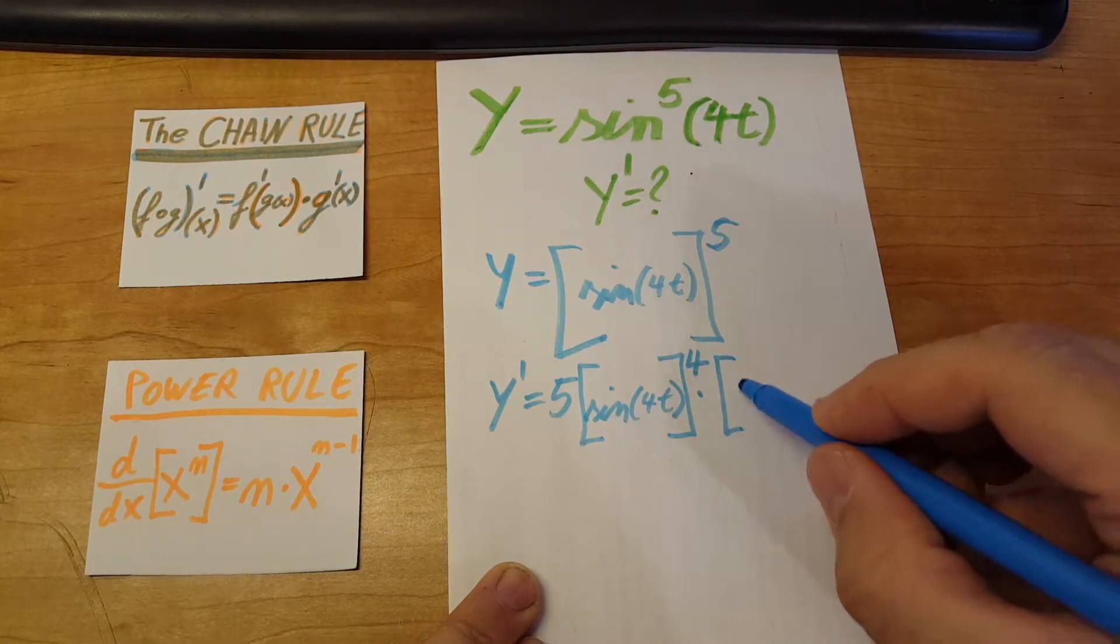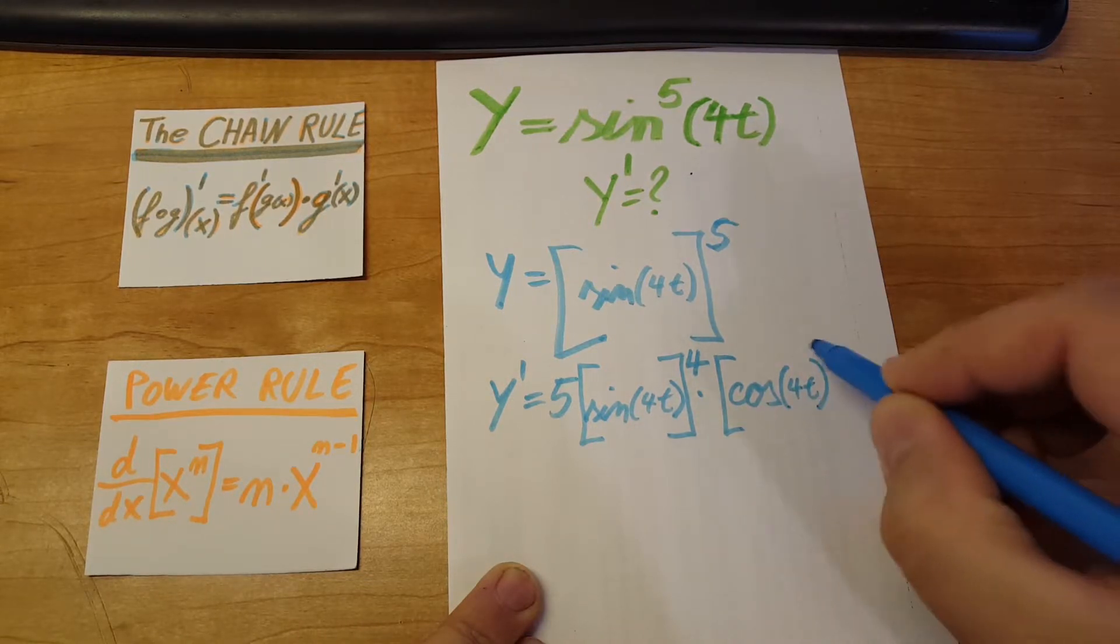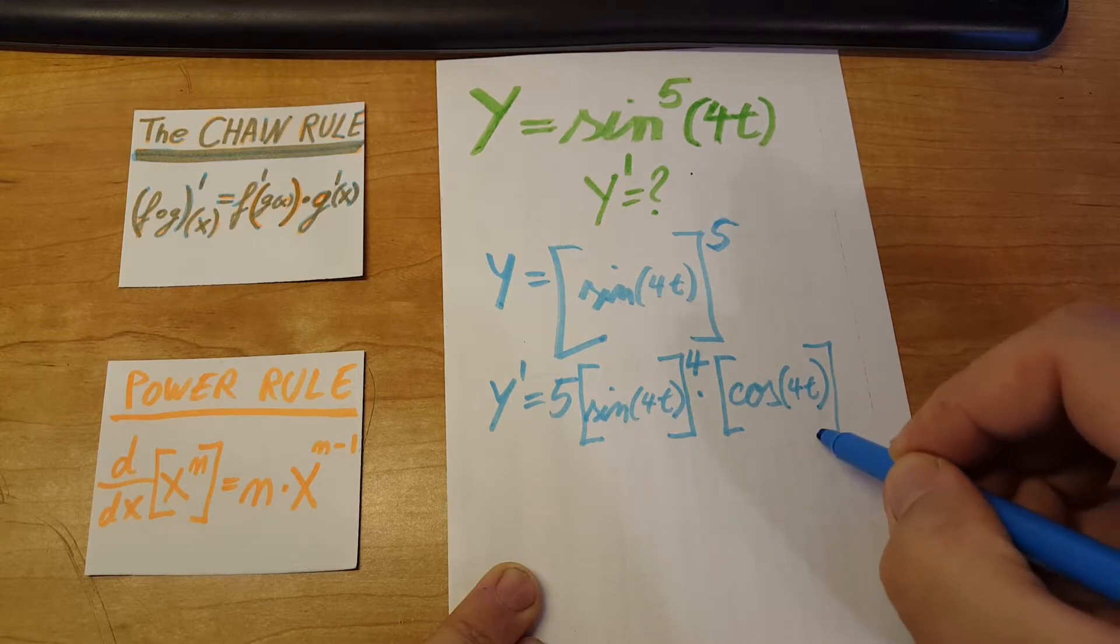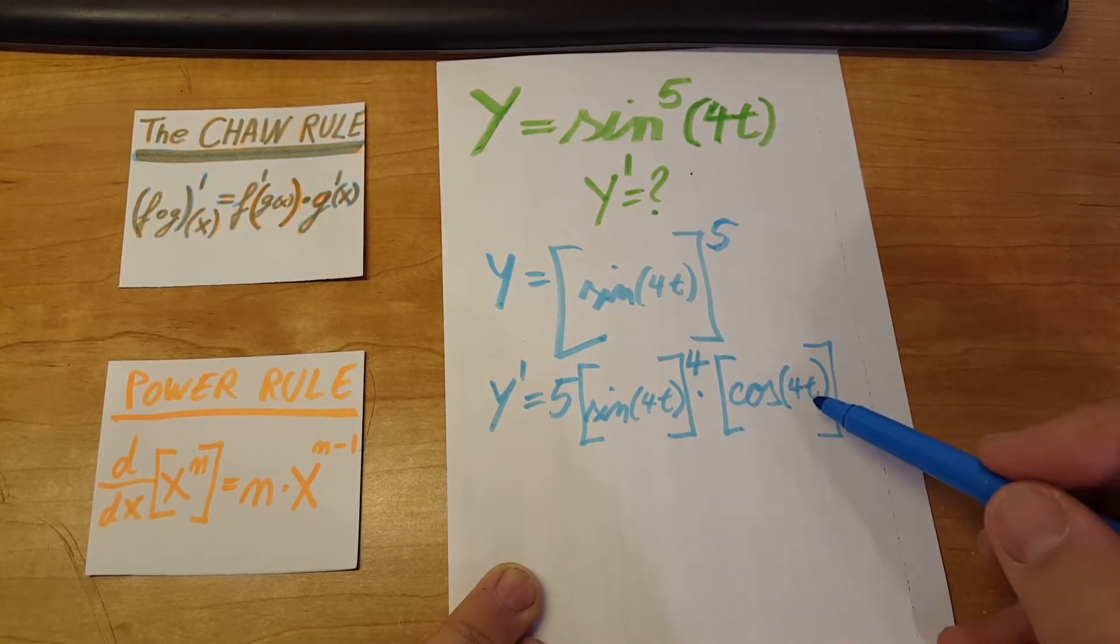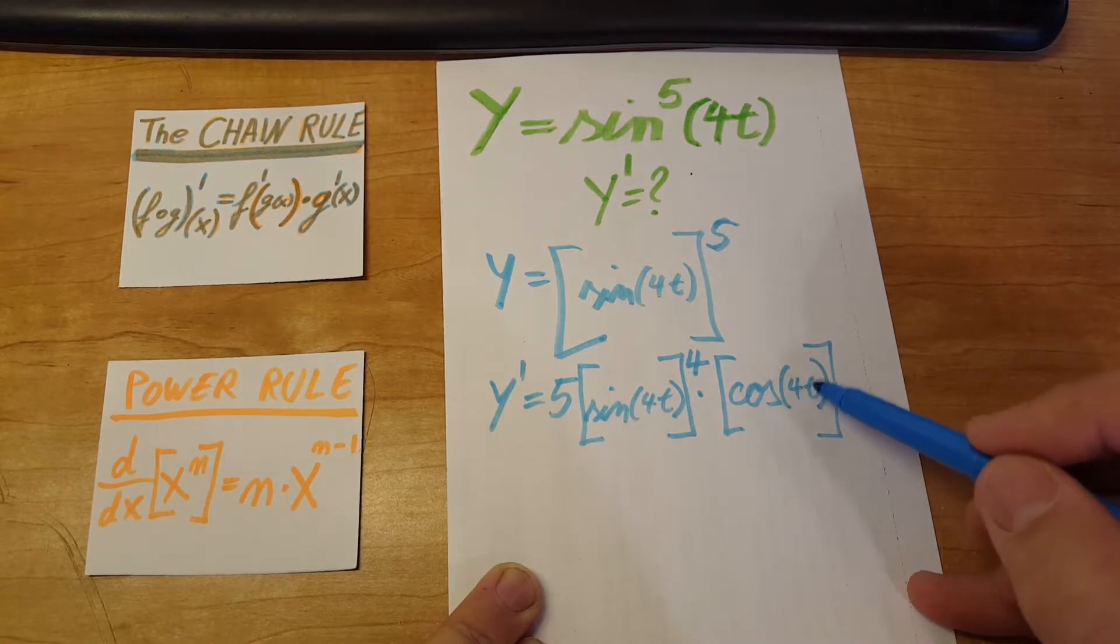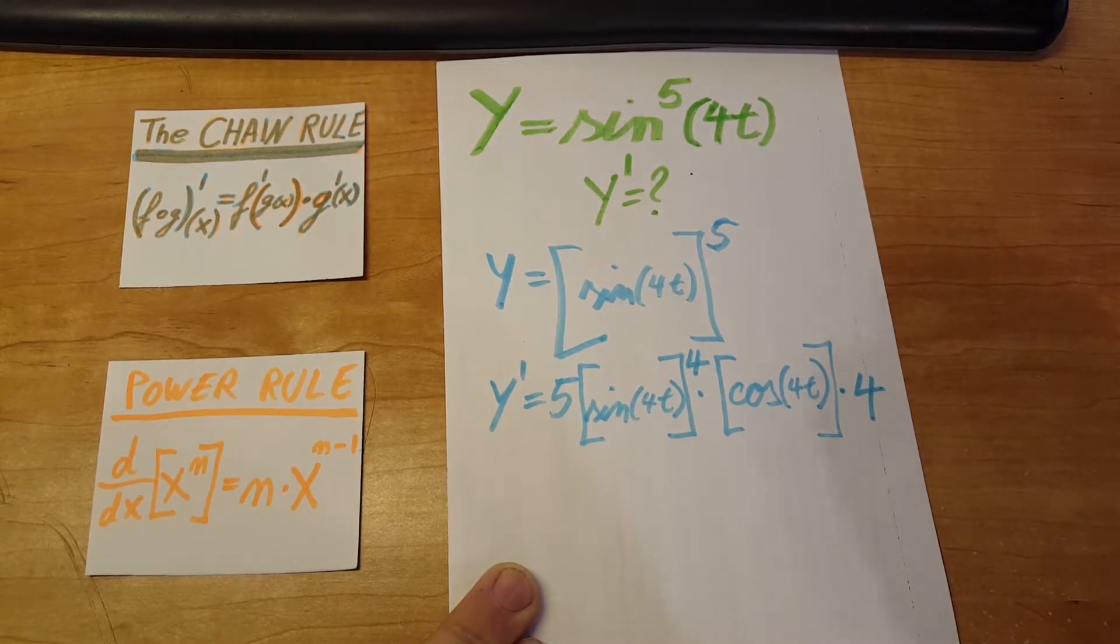Derivative of sine will be cosine and the inside we leave it unchanged. And now to follow the chain rule, we're gonna take the derivative of the inside, which is 4t, and that will be just 4. And there you go.